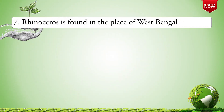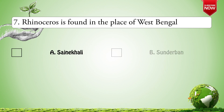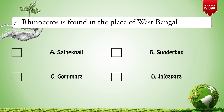Next question: The Rhinoceros is found in which place of West Bengal? Options are: A. Sojnekhali; B. Sundarban; C. Gorumara; D. Jaldapara. The correct option is D: Jaldapara.